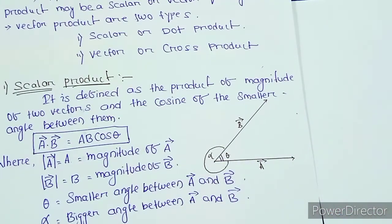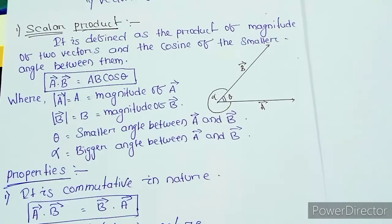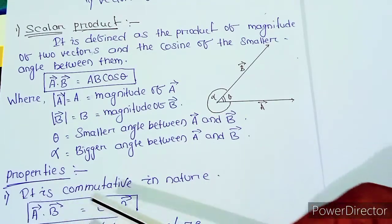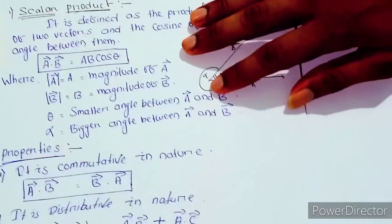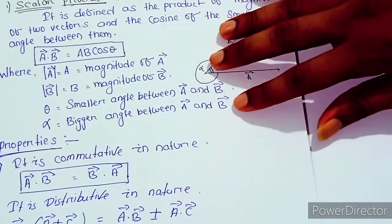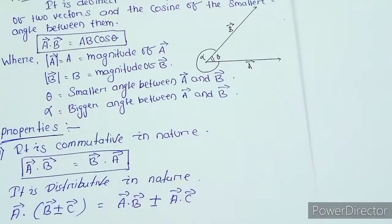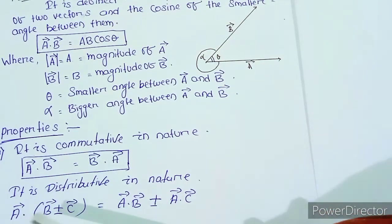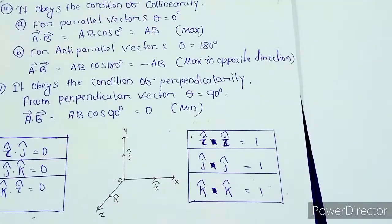The dot product has properties. It obeys the commutative property. It also obeys the distributive property: A dot (B plus or minus C) equals A dot B plus or minus A dot C.